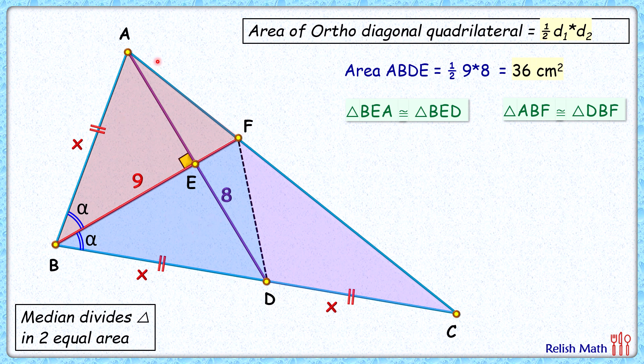Now the complete area is 36, so we can say the area of this blue triangle is half of 36, or 18 cm².